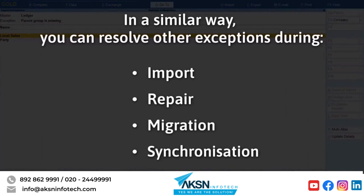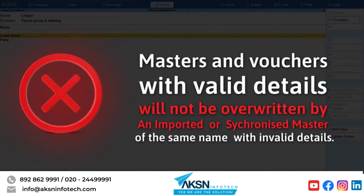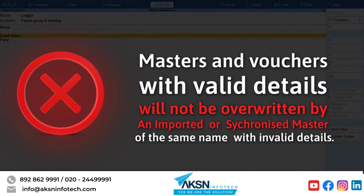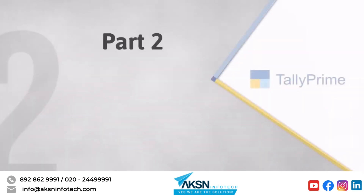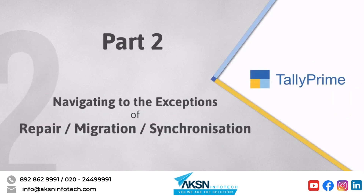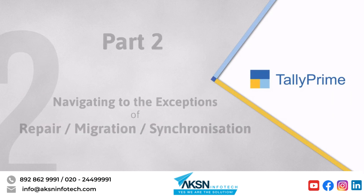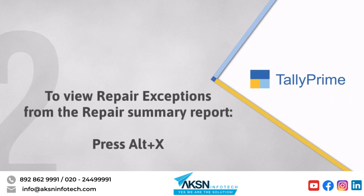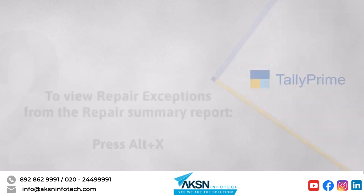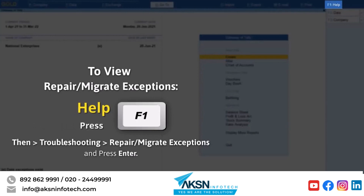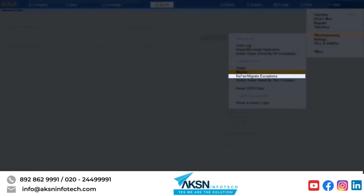Similarly, you can resolve other exceptions during import, repair, migration, or synchronization. TallyPrime ensures that the masters and transactions present in the books with all valid details do not get overwritten by an imported or synchronized master of the same name with invalid details. Now let's see how to navigate to the exceptions report of repair or migration. You can view the exceptions of repair from the repair summary report and those of migration from the migration summary report — just press Alt+X to view the exceptions. However, you may want to resolve exceptions later. Press F1, then Troubleshooting, then Repair or migrate exceptions, and press Enter. Similar to import, you can identify the nature of exceptions and go on to resolve them.